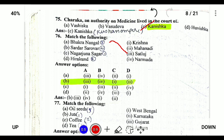Nagarjuna Sagar is located on the river Krishna. So Bhakra Nangal Dam is in Himachal Pradesh, Sardar Sarovar is in Gujarat, Nagarjuna Sagar is in Andhra Pradesh, and Hirakud Dam is in Orissa. So the option is B.